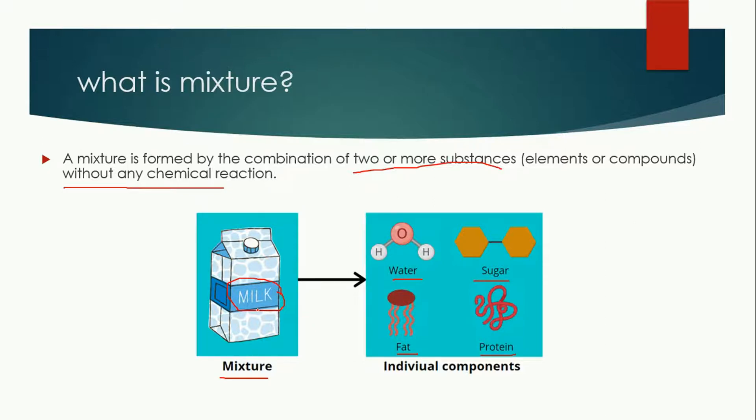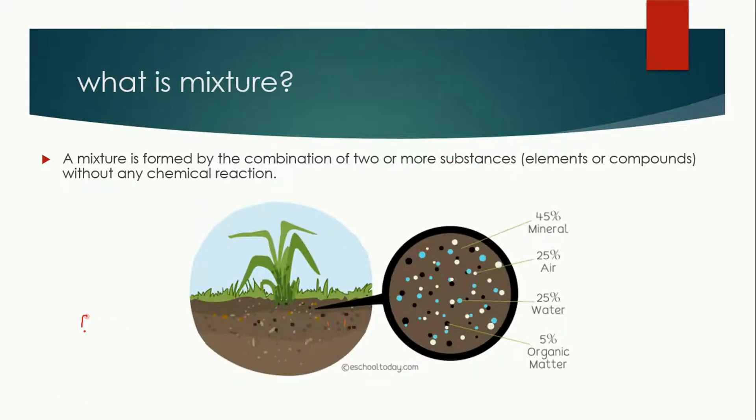Another example is soil. Soil contains minerals, air, water, and organic matter. Along with this, rocks and pebbles are also sometimes present in the soil. These are the individual components. When they combine together, they make a mixture. From the soil, you can easily separate all these individuals. So a mixture contains two or more substances without any chemical reaction, and they are separable.